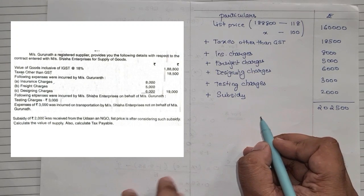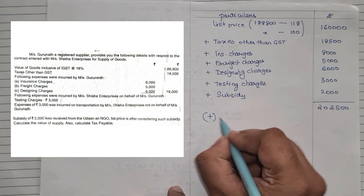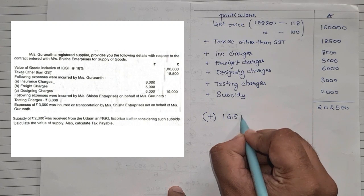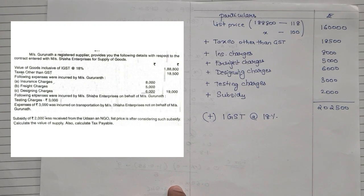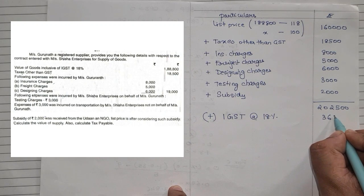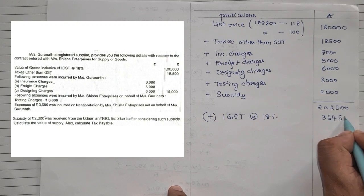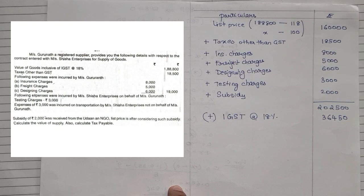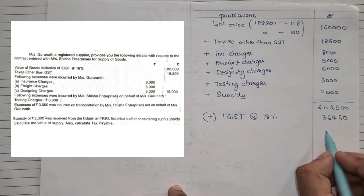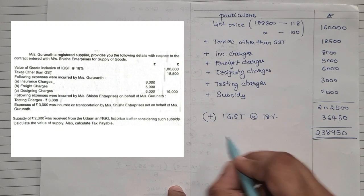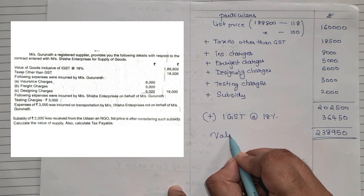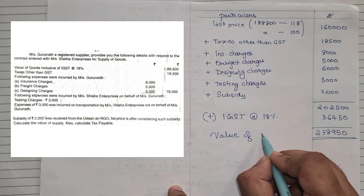On the value of ₹2,02,500, we now add IGST at the rate of 18%: 2,02,500 × 18% = ₹36,450. Adding this to ₹2,02,500 gives us a total value of supply of ₹2,38,950.